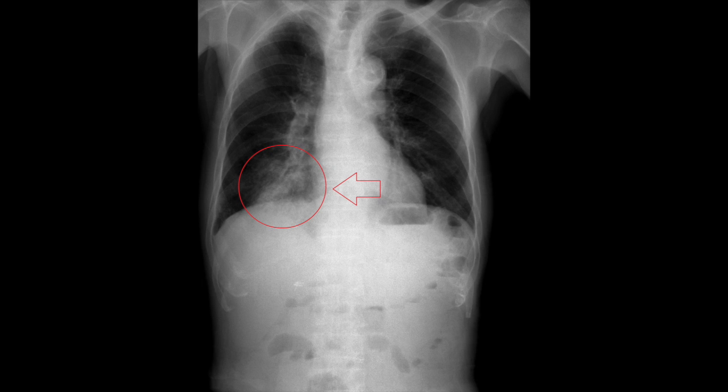What do you guys see here? The arrow and circle definitely make it easier. This is a right lower lobe pneumonia since the pneumonia is actually touching the diaphragm. And this is more indicative of the aspiration pneumonia I was talking about, which is most common in the right lower lobes.